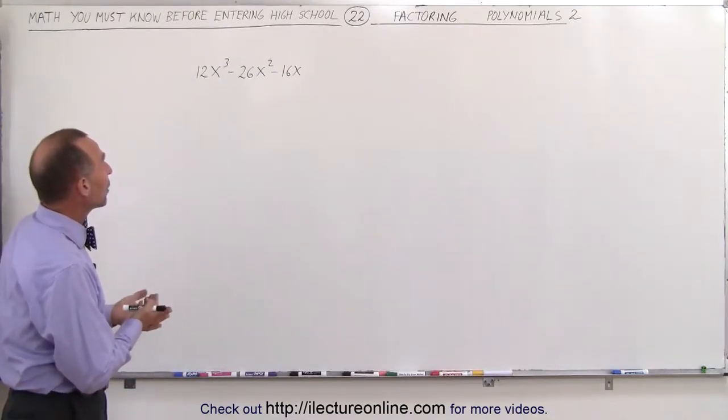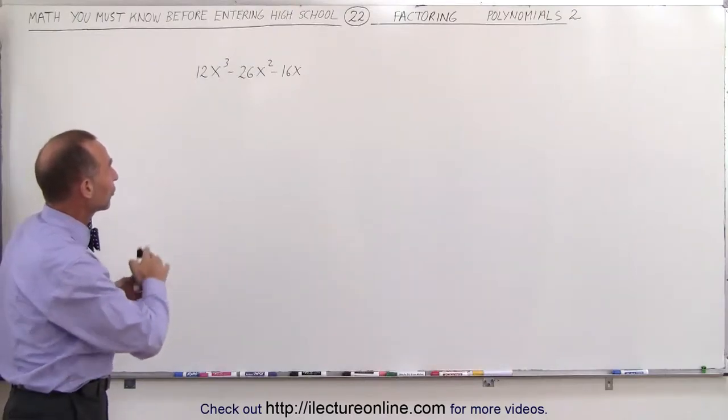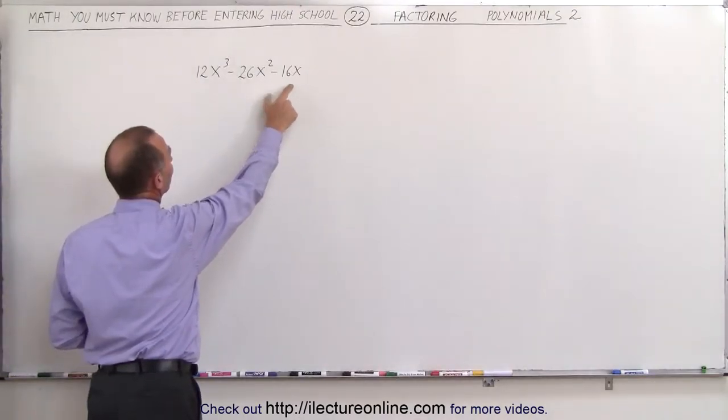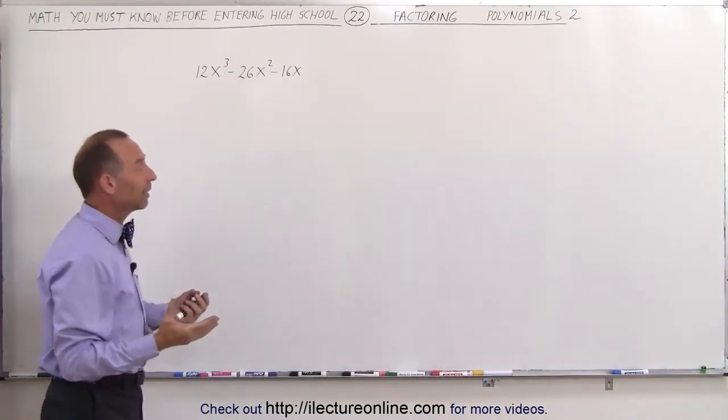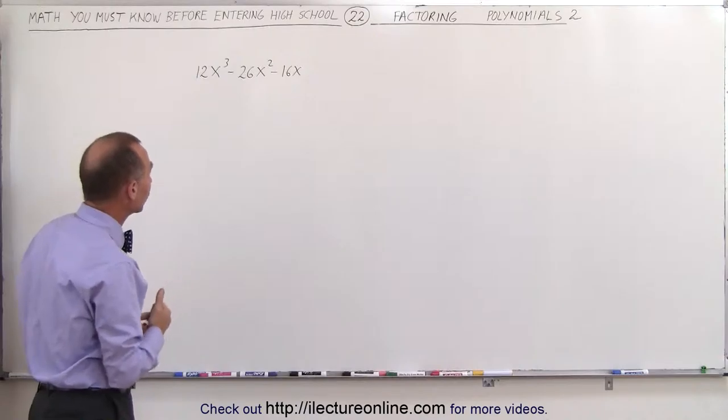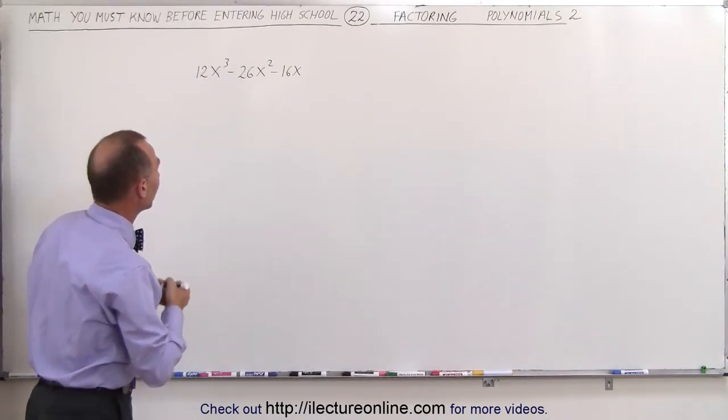The first thing we want to do is see if there's any common factors. Notice there's three terms separated by negative signs. In each term we have an even number, which means we can factor out a 2, and we have an x we can factor out as well.